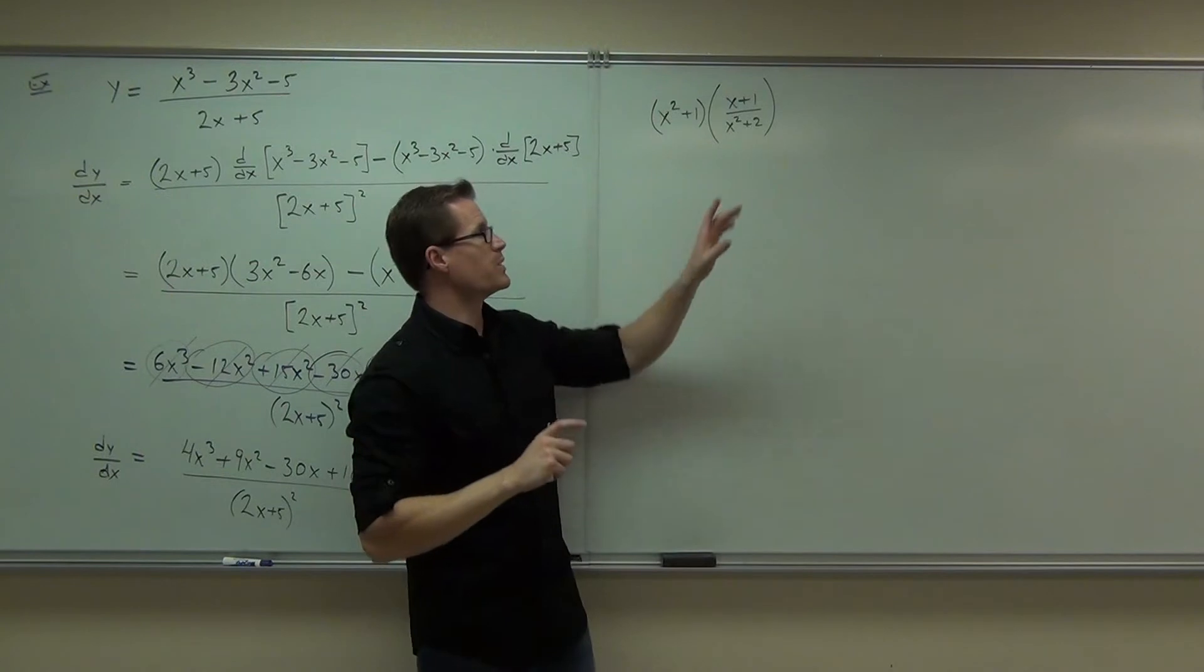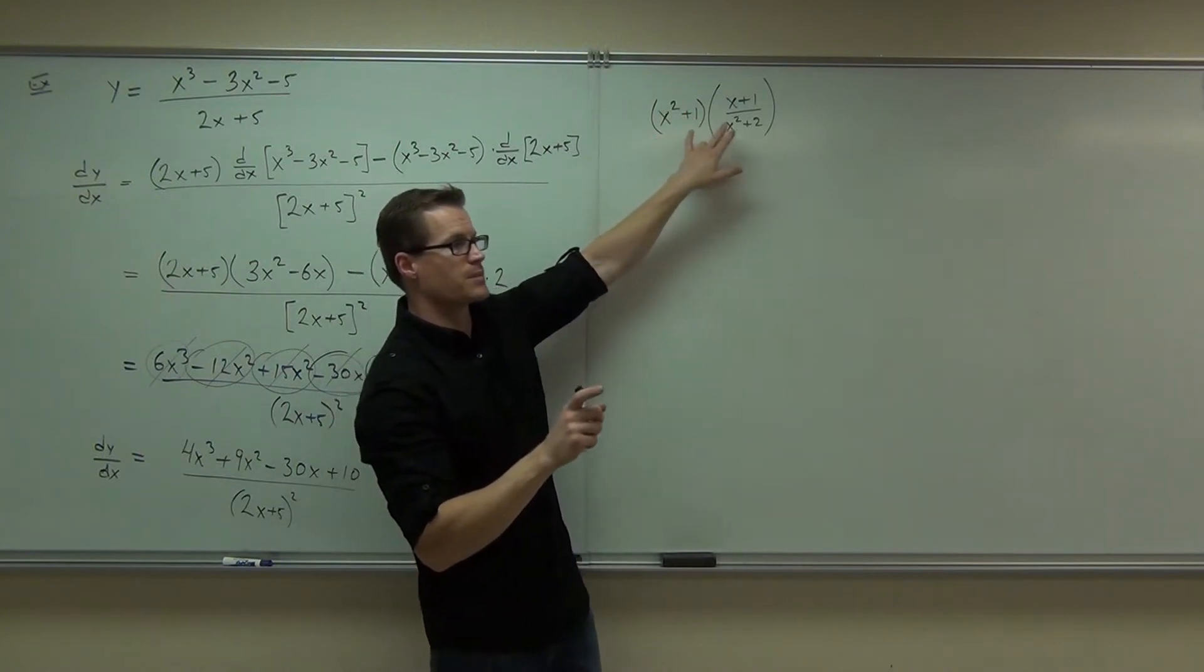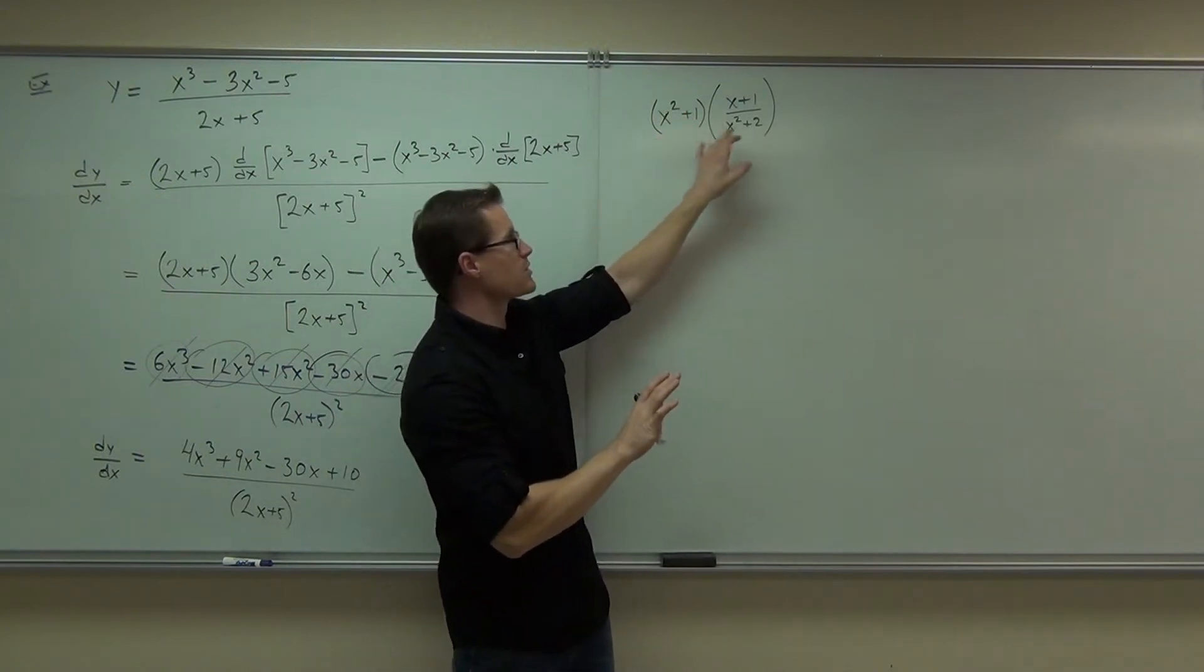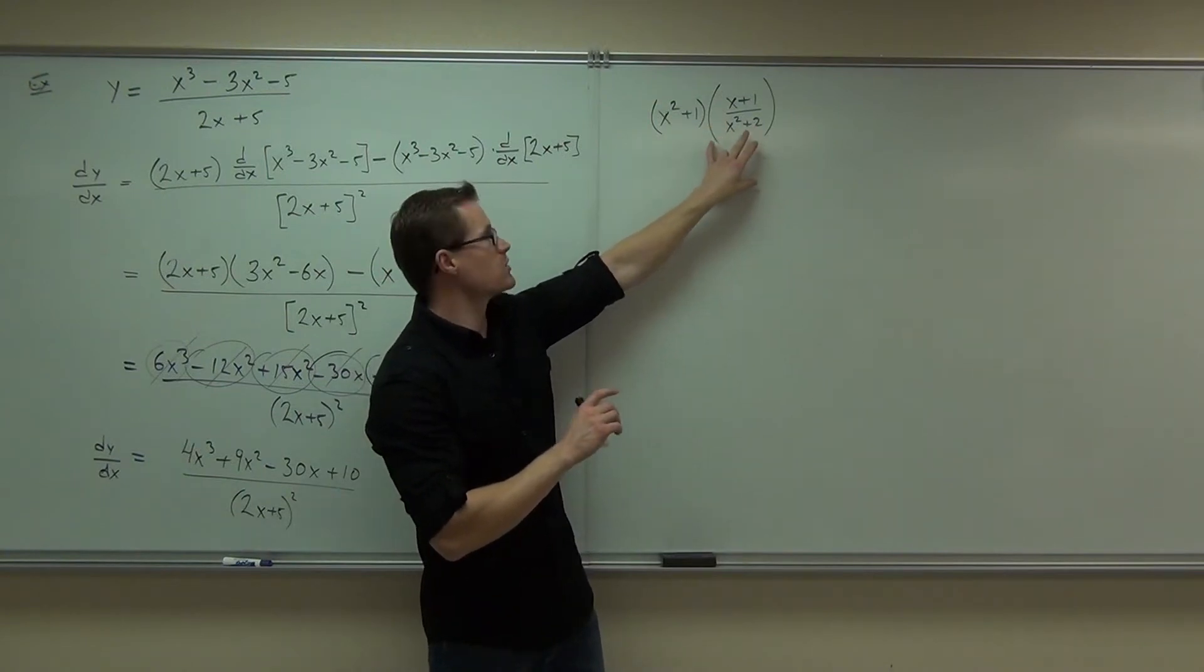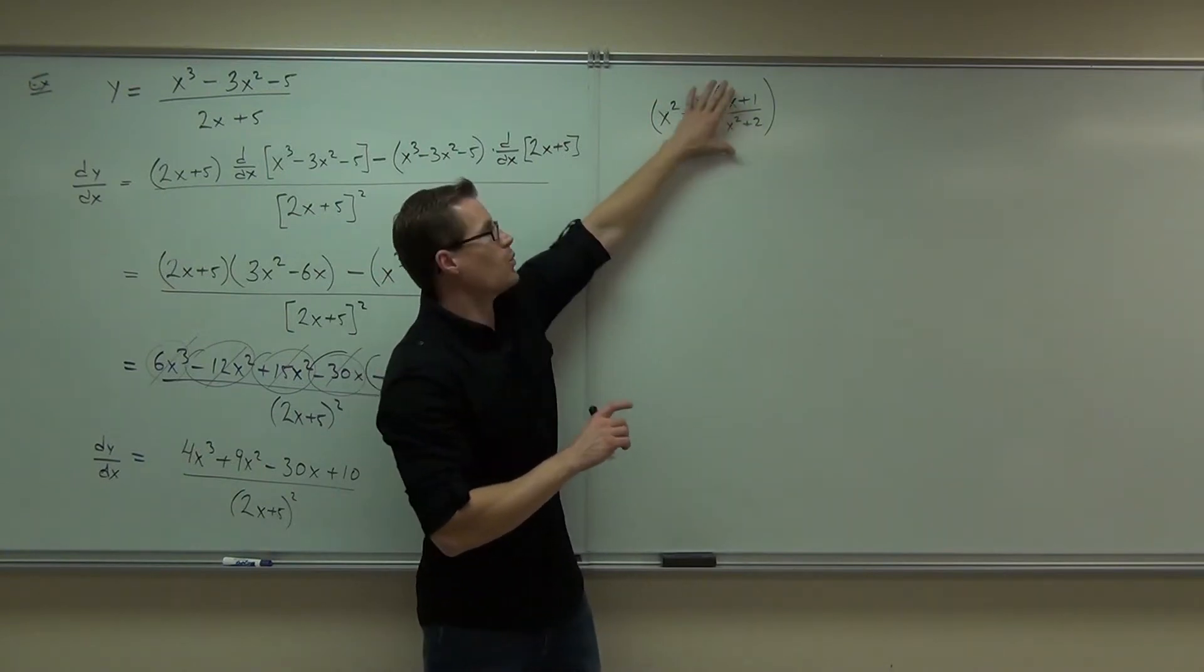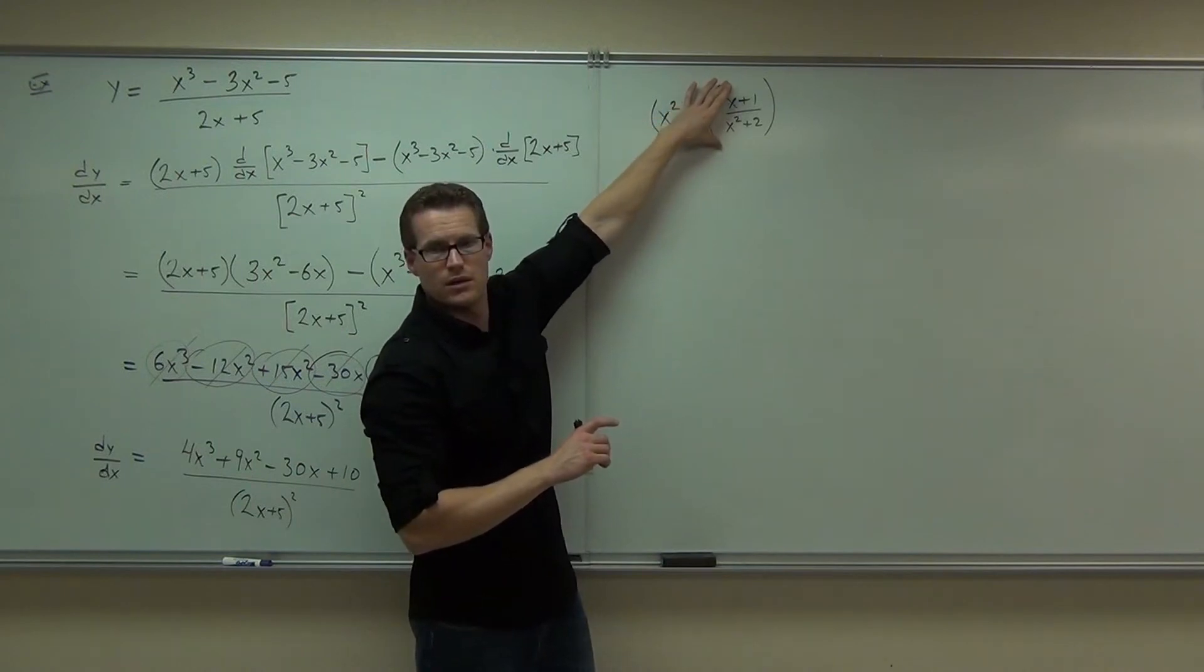As you're going through the product rule, it would be derivative of the first, that'd be fine, times the second, still okay, plus the first, times the derivative of the second. And as soon as you get to the derivative of the second, how do you take the derivative of that thing? It's a quotient rule.